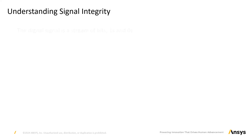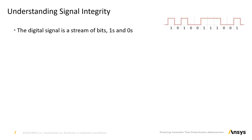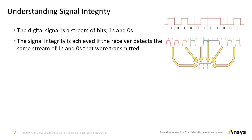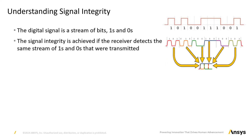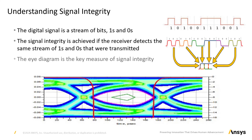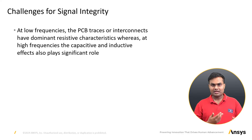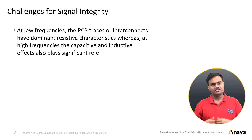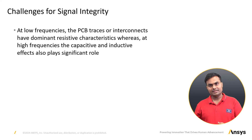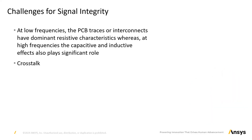A digital signal is a stream of bits of ones and zeros. Signal integrity is achieved if the receiver detects the same stream of ones and zeros that were originally transmitted. An eye diagram can be used to measure signal integrity. At low frequencies, PCB traces or interconnections have dominant resistive characteristics, whereas at high frequencies, capacitor and inductor effects can also play a significant role.